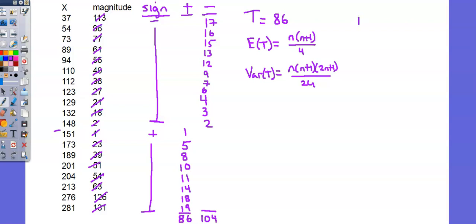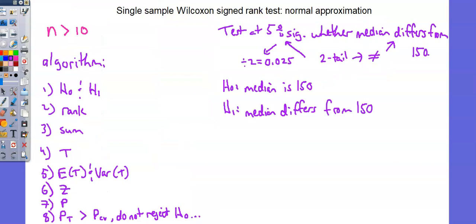And for n, in this example, equals 19. The two values we get are 95 for expectation, 617.5 for variance. Let's take a look at the algorithm. We're on to step 6. We're going to calculate a z.